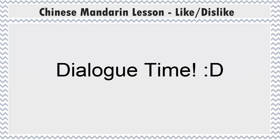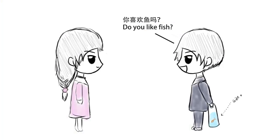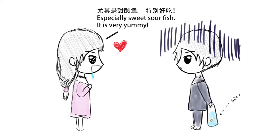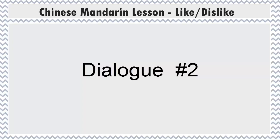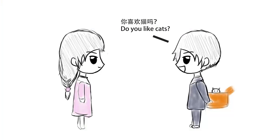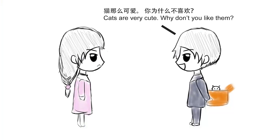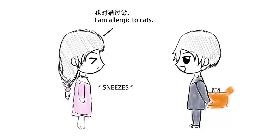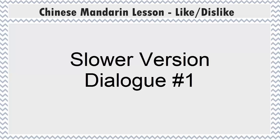For dialogues, I like to use native speed as well as emotions, so don't worry if you don't catch it right away. I will have a slower version at the end for you to refer to. 你喜欢鱼吗? 我喜欢鱼。尤其是甜酸鱼，特别好吃！你喜欢猫吗? 不喜欢。猫那么可爱，你为什么不喜欢? 我对猫过敏。